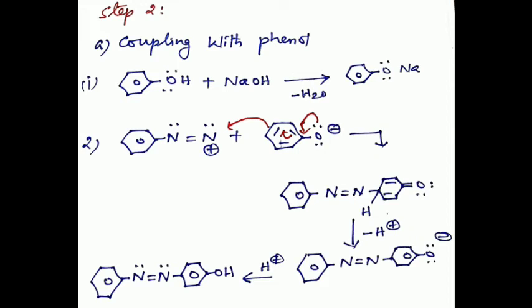The para position of phenol is blocked, so the diazonium ion tends to attack the ortho position. Coupling always takes place at ortho and para positions — coupling does not take place at the meta position.